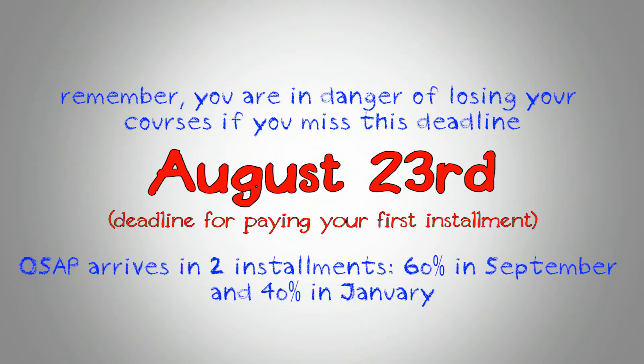OSAP arrives in two installments: 60% in September and 40% in January. Please be aware that for all students, there is a monthly service charge on any unpaid fees on the 15th of each month starting on November 15th. You should check your financial account often to be sure you know what you owe.